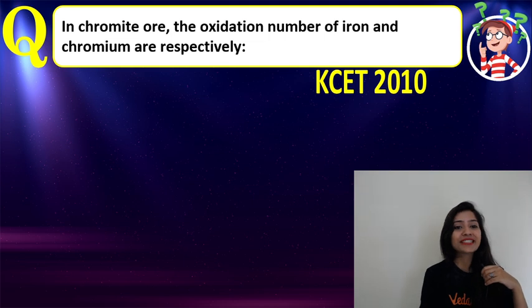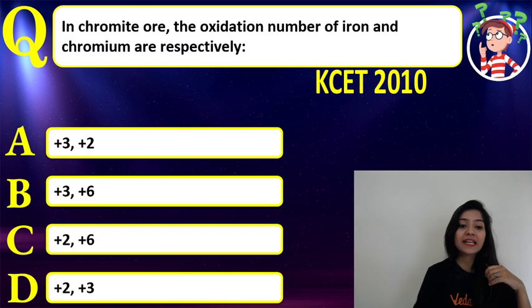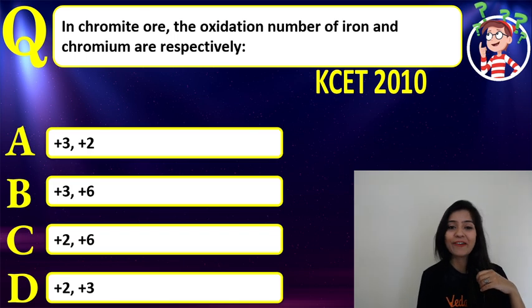Now, coming to our question. The question is: In the chromite ore, the oxidation number of iron and chromium are respectively. And the options are on your screen. Give me the correct answer.